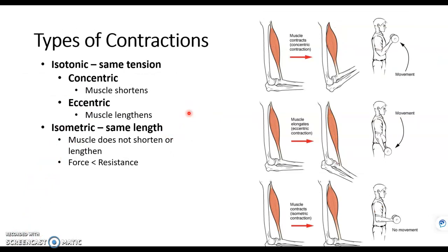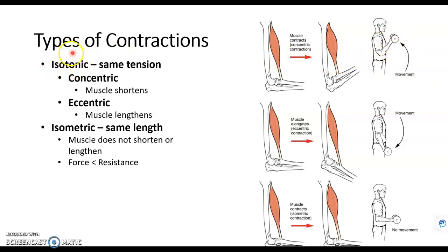We'll end this video with a few different types of contractions. An isotonic contraction is when there is movement, like shown here in this image. Here's our bicep muscle — it contracts, meaning the tension is the same throughout the movement, and that's what isotonic means: same tension. If the muscle shortens, it's concentric. If it's stretching — meaning the weight is still in the arm but we're moving it in the opposite direction — that's called an eccentric contraction. Those are isotonic contractions.